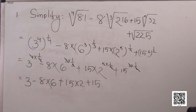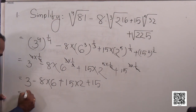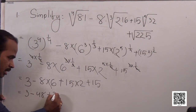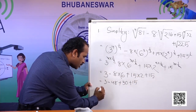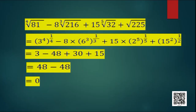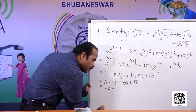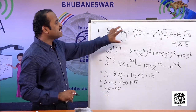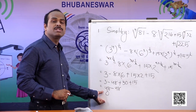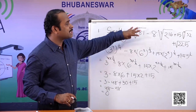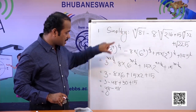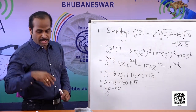Computing: 3 − 48 + 30 + 15. The positive terms 30 + 15 + 3 = 48, and 48 − 48 = 0. So the entire expression simplifies to 0.